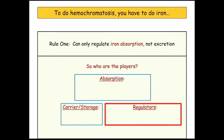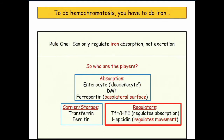You can only regulate iron absorption — we can't excrete iron. The players are: the absorption pathway, the carrier and storage pathway, and the regulators. You have the enterocyte, also called the duodenocyte — that's where iron is absorbed in the duodenum. You have the divalent metal transporter to take iron into the enterocyte, and it travels through ferroportin into the circulation. It then travels attached to transferrin and is stored as ferritin.